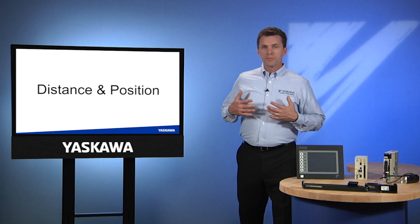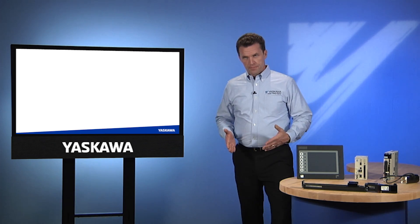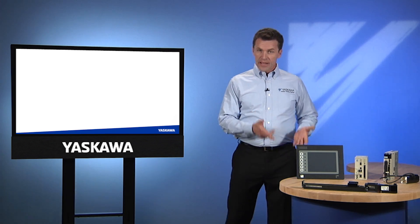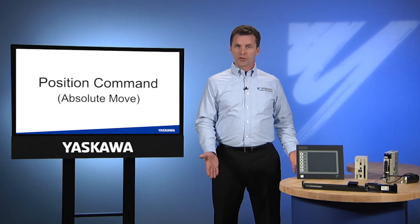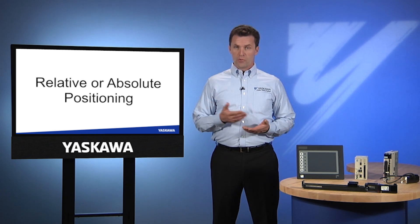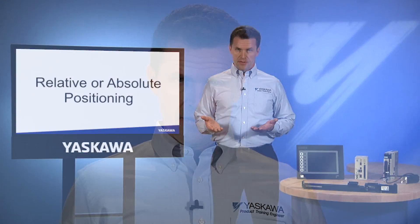Here's an example: if you order me to take three steps forward, that's a distance command — a relative move. If you tell me to go to the table, that's a position command — an absolute move. It's the same result, I'm at the table, but the type of command is different. Modern industrial motion controllers allow the programmer the option to define the move either relatively or absolutely, whichever makes the most sense for that particular part of the control program. For this reason, we really can't tell which method was used by simply looking at the machine in motion.